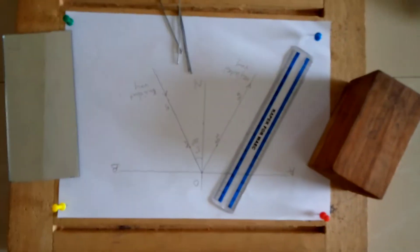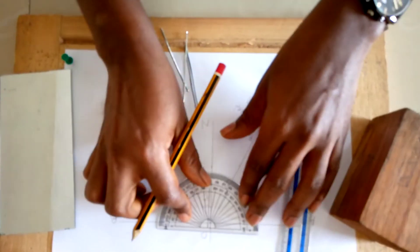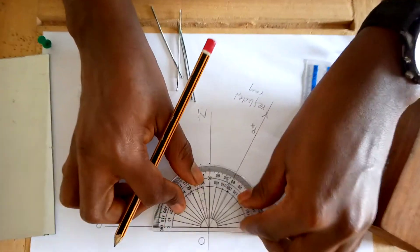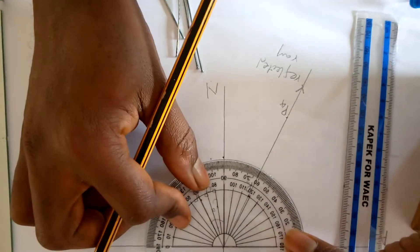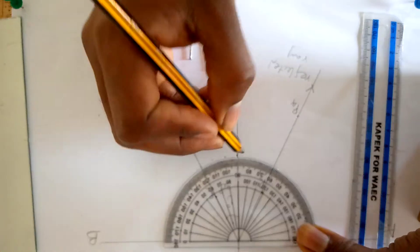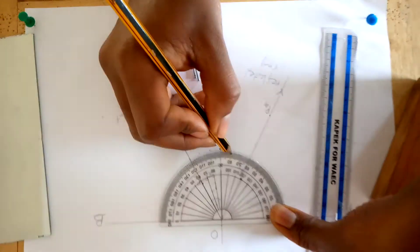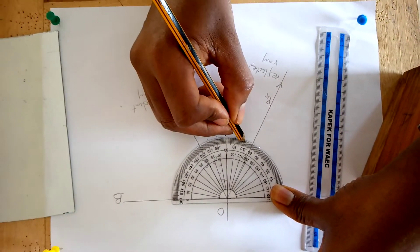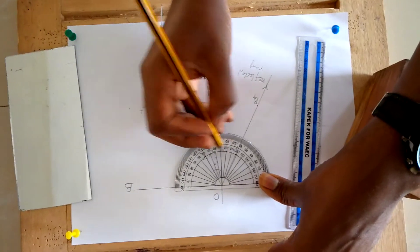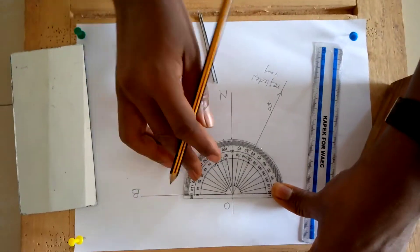Put your protractor back to measure the angle of reflection. The angle of reflection is the angle between the reflected ray and the normal. In this case we have 90 degrees, 80, 70, and 60. 90 minus 60 will give you 30 degrees.